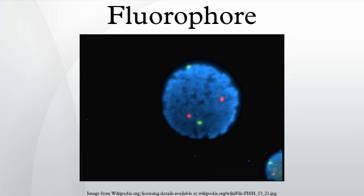Further families include naphthalene derivatives, coumarin derivatives, oxadiazole derivatives such as pyridyloxazole, nitrobenzoxadiazole and benzoxadiazole, anthracene derivatives including anthraquinones such as DRAQ-5, DRAQ-7, and CytRed Orange, pyrene derivatives such as Cascade Blue, oxazine derivatives including Nile Red, Nile Blue, cresyl violet, and oxazine 170.